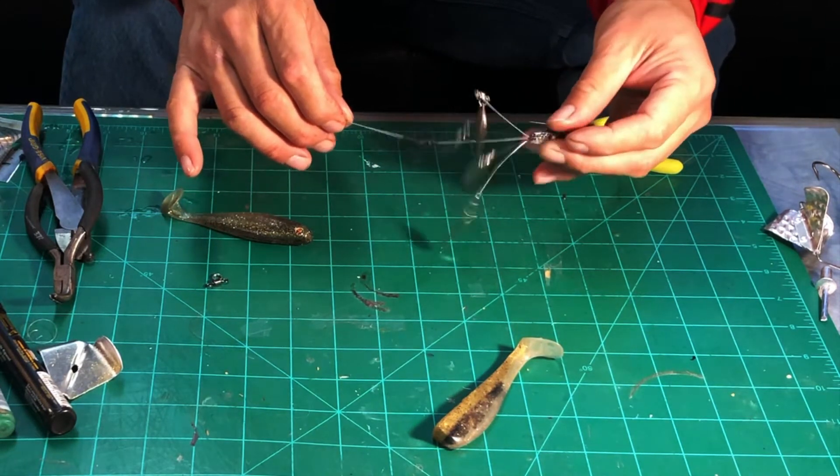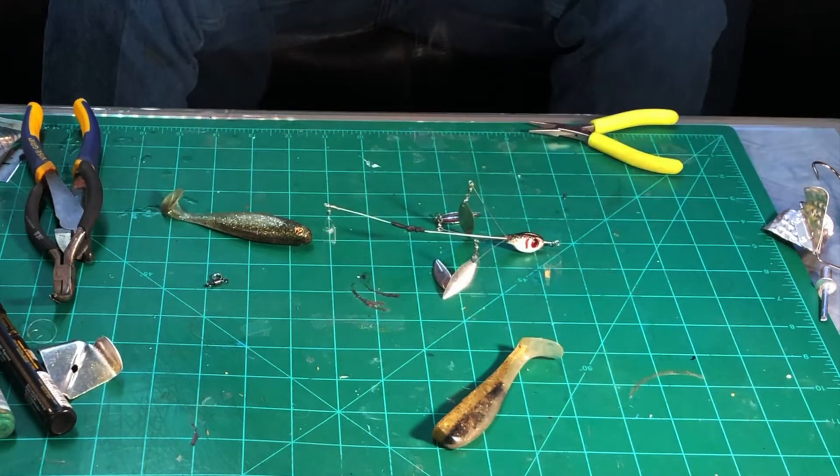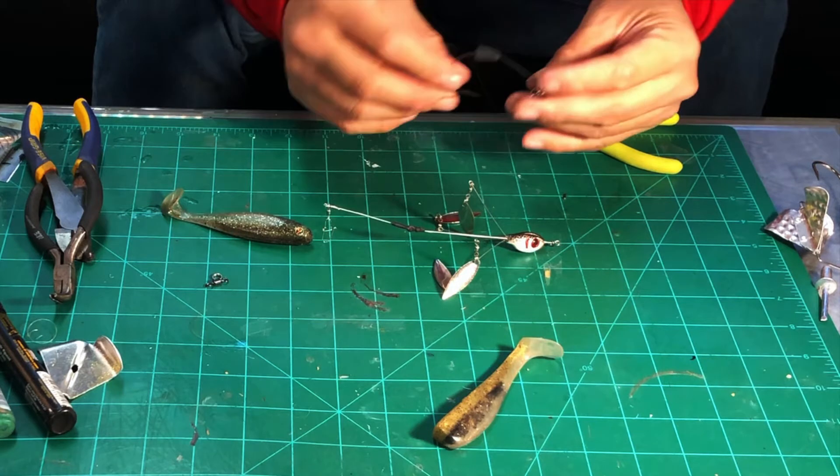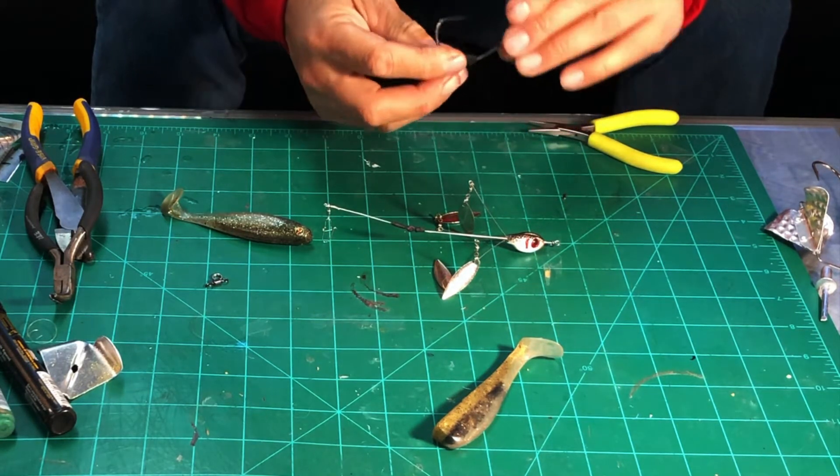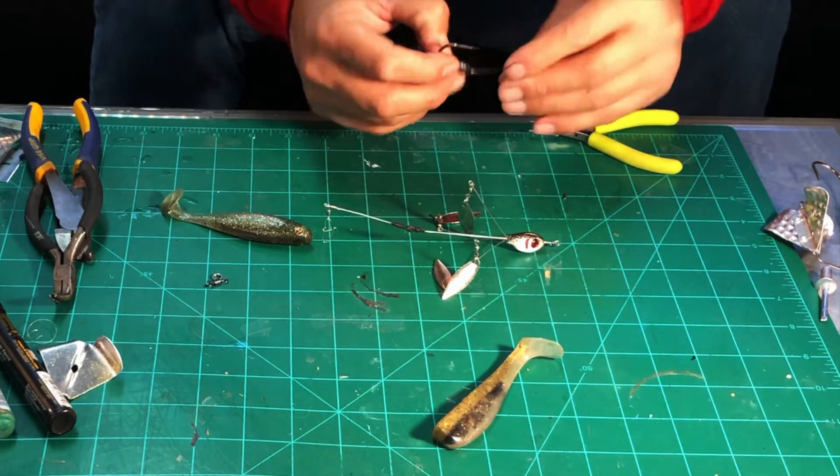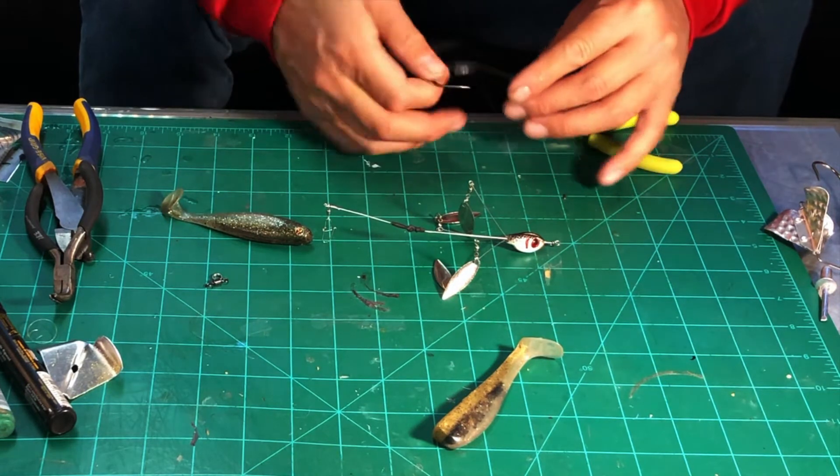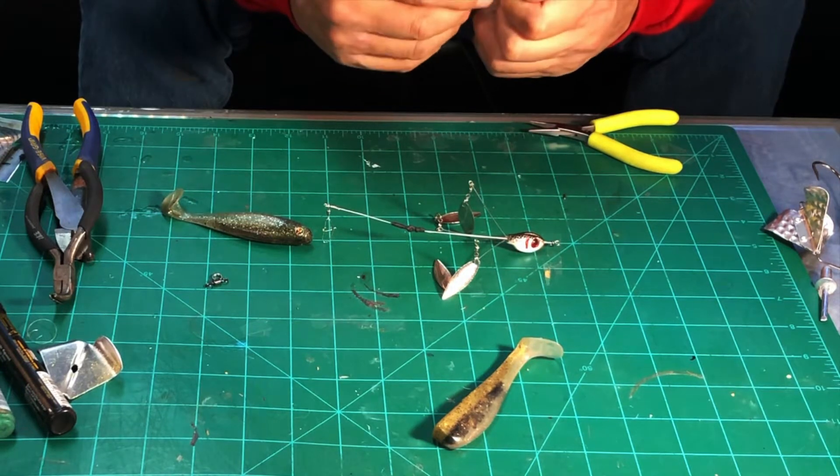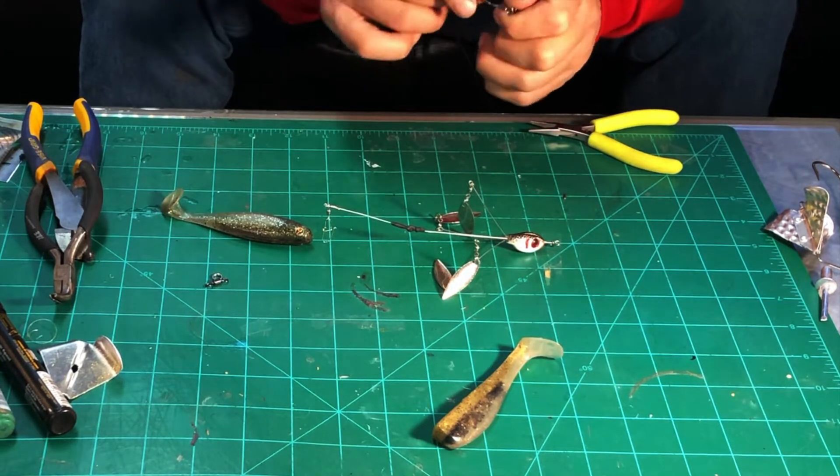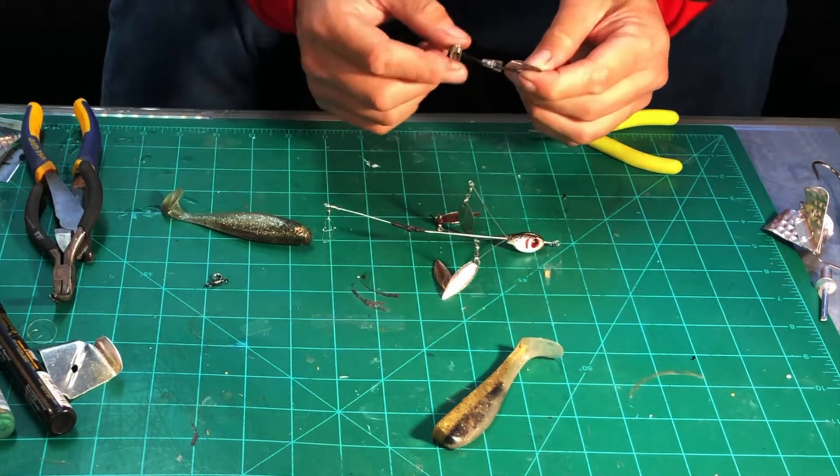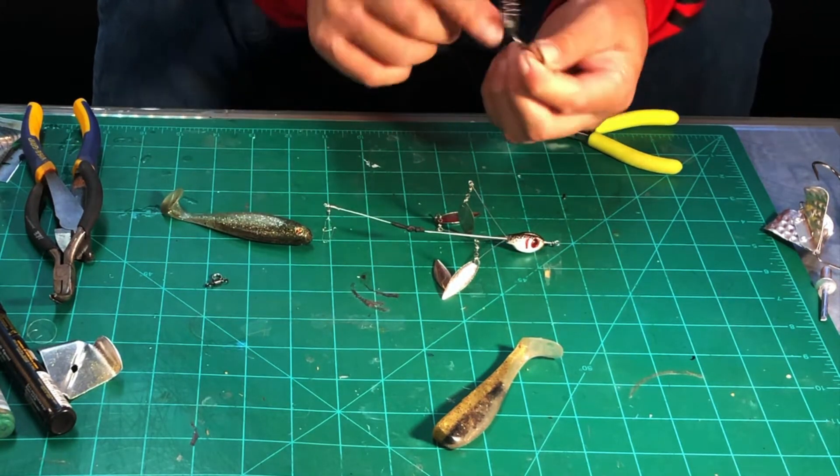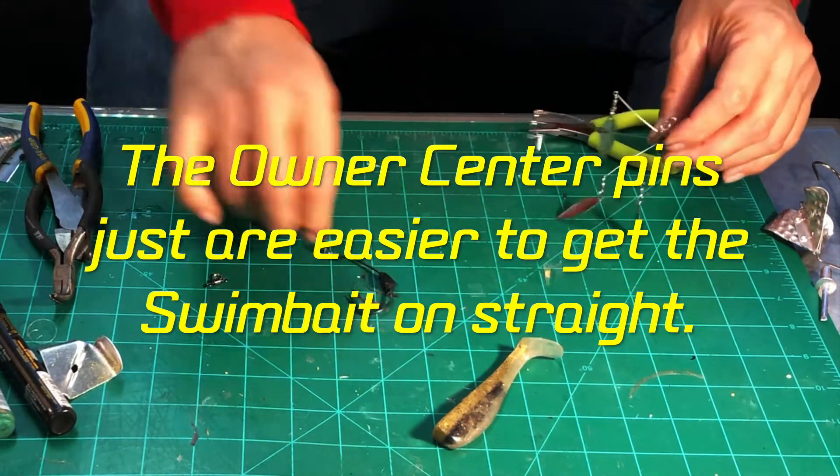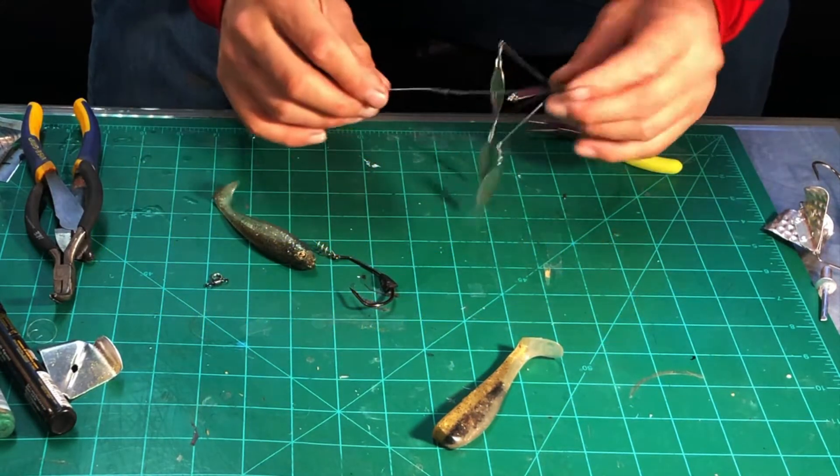I forgot the hook, so I'll be right back. All right, found the hook. It's a little VMC swimbait hook. I switched the VMC screw keeper out for an Owner one. I order larger screw keepers—I like the Owner ones—so I put them on all my swimbait hooks. So there's the hook, there's the bait, and here's the A-rig.